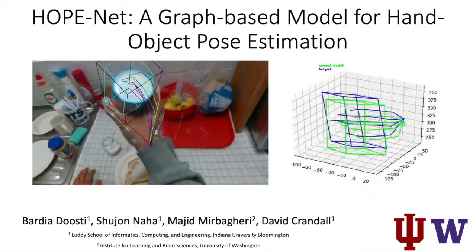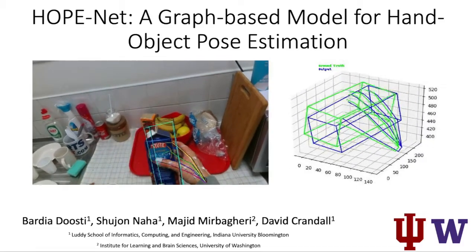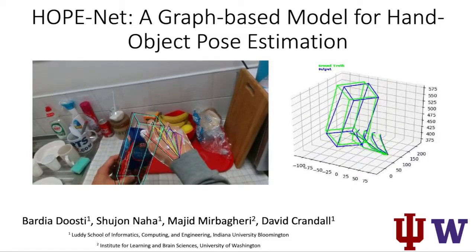Hello. In our paper, HOPE-Net, a graph-based model for hand-object pose estimation, we worked on 2D and 3D pose estimation of a single RGB image in real time.